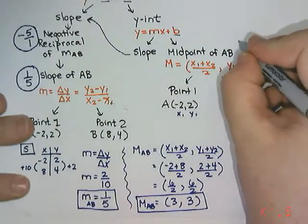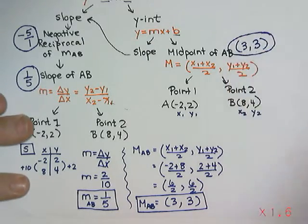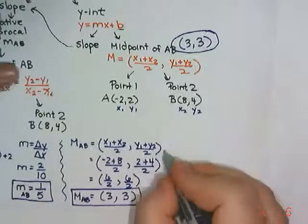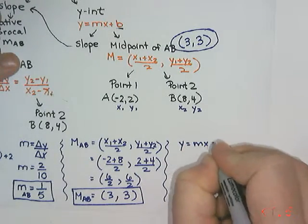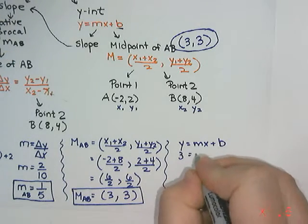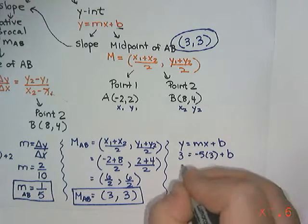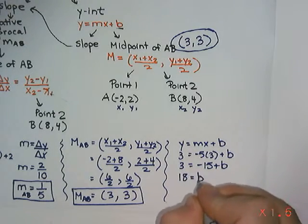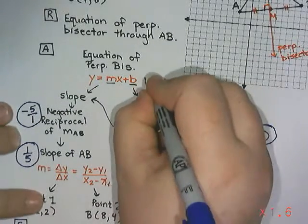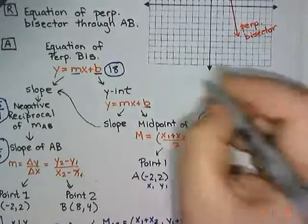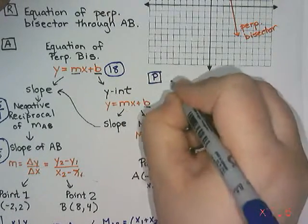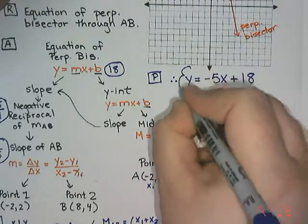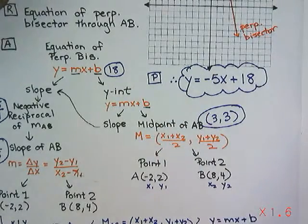The last thing I need to do is take the slope of negative 5 and the midpoint 3 and 3 and put them into y equals mx plus b to find the y-intercept. So: 3 equals negative 5 times 3 plus b. Negative 5 times 3 is negative 15. Adding 15 to both sides, I get b equals 18. So I now know b is 18, which means my equation is y equals negative 5x plus 18. Therefore, the equation of the perpendicular bisector through AB is y equals negative 5x plus 18.